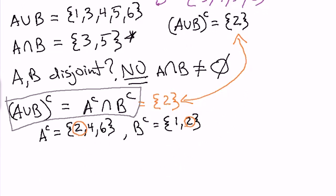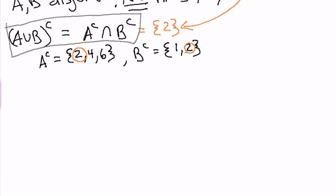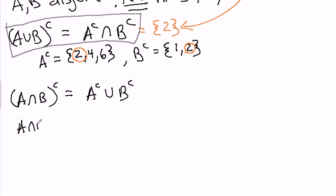Now, there is also, this also goes the other way, in the sense that the complement of an intersection is equal to the union of the complements. So let's show this with this example.